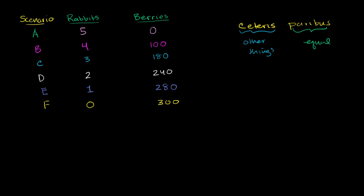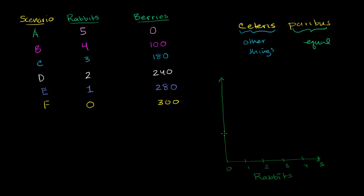Now I want to plot these scenarios. On one axis I'll have the number of rabbits, and on the other axis the number of berries. So this axis will be the rabbits axis — zero, one, two, three, four, five rabbits. And this other axis will be the berries axis — 100 berries, 200 berries, and 300 berries.